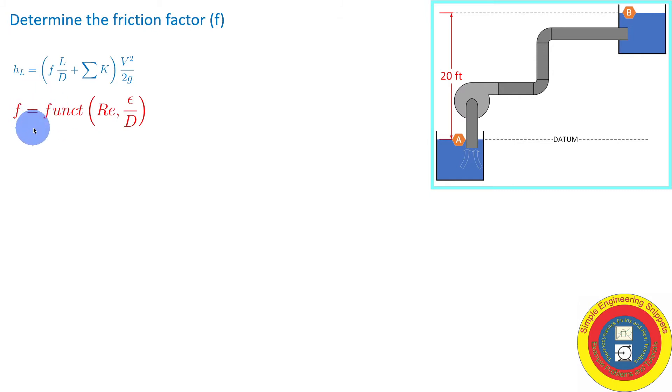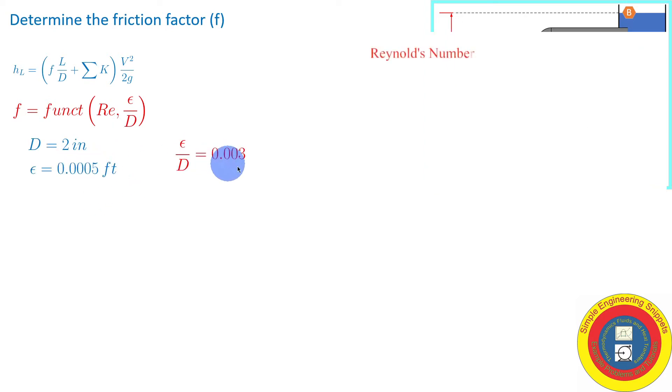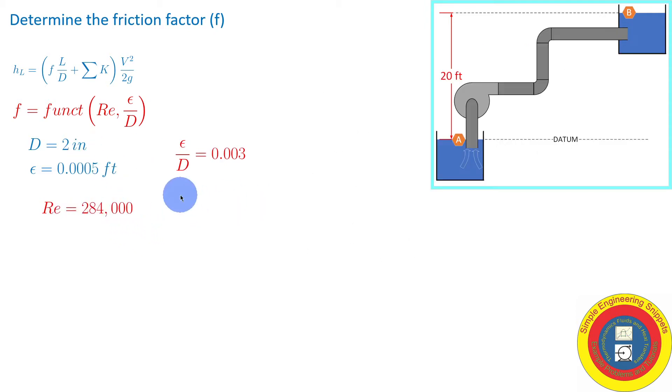In general, the friction factor is a function of Reynolds number and relative roughness. We know the diameter, we know the roughness. We can calculate the relative roughness. Let's calculate the Reynolds number. Details are shown. Reynolds number is 284,000. So this is turbulent flow. We will use the Moody diagram to determine the friction factor.